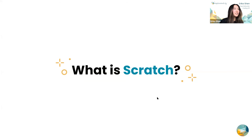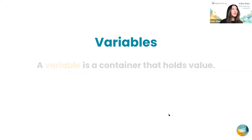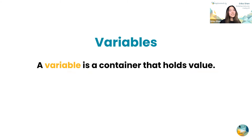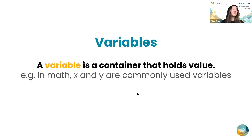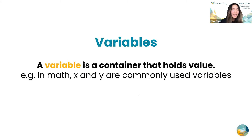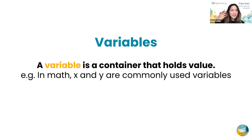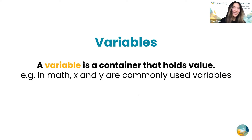Let's dive into the actual material. A variable is a container that holds a value. Something you guys might have seen is in math — if you've used x and y, you usually see like x equals one, y equals two. And it's exactly the same in coding; it's just going to be on a computer instead of on a piece of paper.